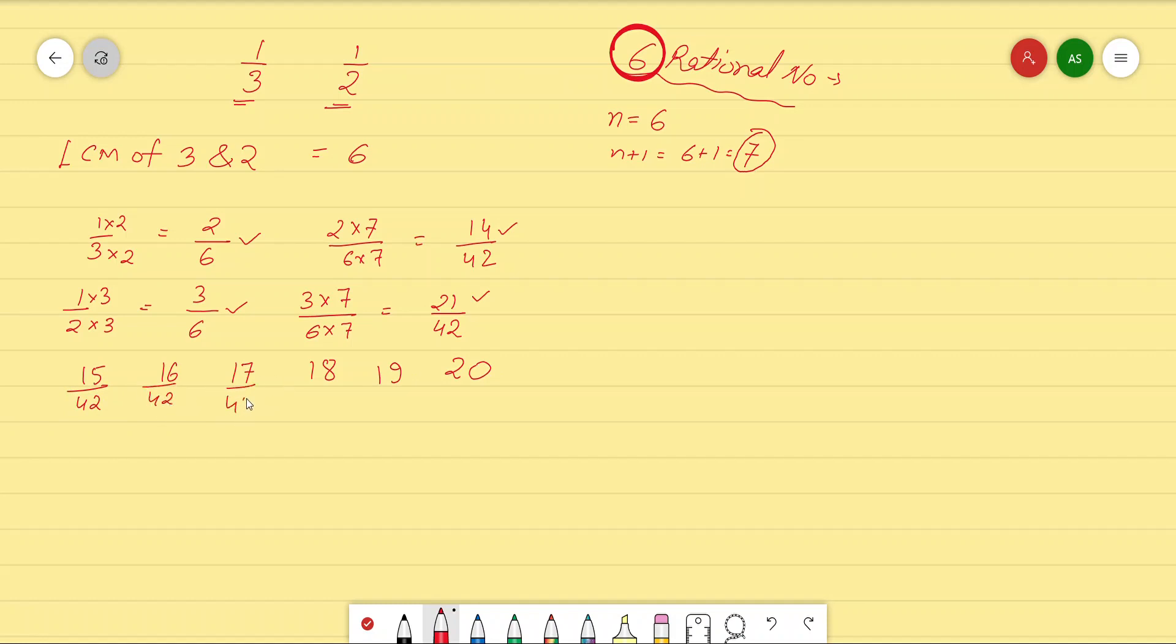This is the method in which you will always get at least the desired number of rational numbers between a pair of rational numbers. You may get more than that by using this method, but you will never get lesser than the required value, that is 6. Now, we will try to reduce it in the simplest form if possible.